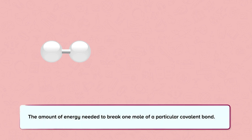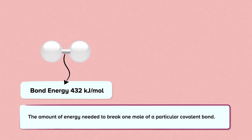Bond energy is the amount of energy needed to break one mole of a particular covalent bond. Each chemical bond has a specific bond energy associated with it. For example, if we have one molecule of hydrogen — which is two atoms of hydrogen bonded to each other — and the bond energy is 432 kilojoules per mole, that means we need to supply 432 kilojoules per mole of energy to break one mole of these bonds.